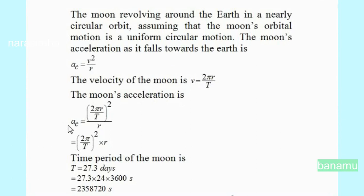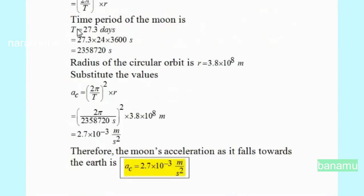Moon's acceleration is AC = (2πR/T)²/R, which simplifies to AC = (2π/T)² × R. The time period T is equal to 27.3 days. Converting days to seconds: one day equals 24 hours and one hour equals 3600 seconds, so T = 27.3 × 24 × 3600 = 2,358,720 seconds.